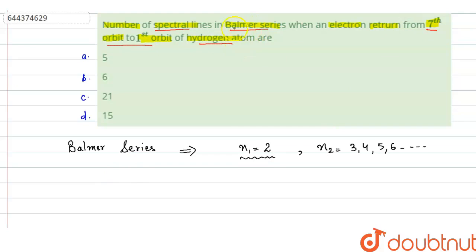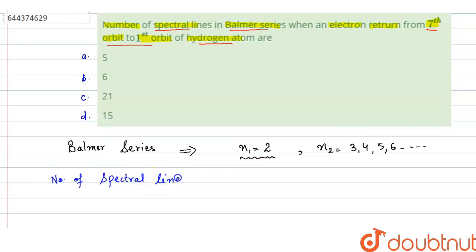Since there is a transition from the seventh orbit to the first orbit, we want to calculate only the Balmer series spectral lines, so we take n2 equal to 7 and n1 equal to 2. There is a simple formula: number of spectral lines equals n2 minus n1. So 7 minus 2 gives 5, meaning there will be a total of 5 transitions.